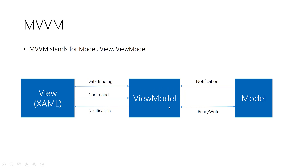But the ViewModel is something totally different — it is a testable class and it is not related to any specific framework or type of application. For example, you can have the same ViewModel used in an application running on Android and iOS, in a universal Windows 10 application, in a WPF application, and in other frameworks like Avalonia. In addition, you cannot actually test the code-behind file of a view, but you can test the ViewModel, which is a very great advantage of implementing MVVM.